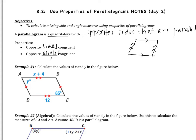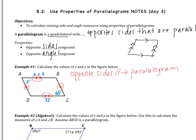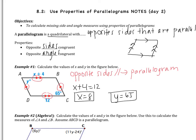We're going to use this to complete example one: calculate the values of x and y in the figure below. We know this is a parallelogram because the opposite sides are parallel. Since opposite sides are congruent, x plus 4 is congruent to 12, giving us x equals 8. And since opposite angles are congruent, y equals 65.